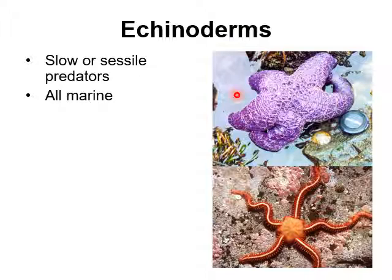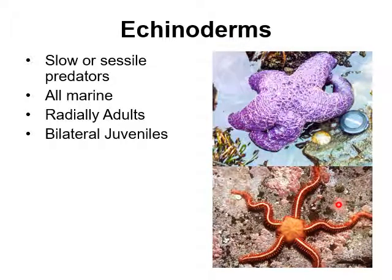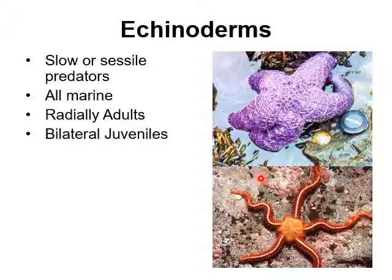Echinoderms are only found in the ocean. An interesting feature is that adult echinoderms display radial symmetry — everything radiates from a central point — but as juveniles they are bilateral, with a left and right side. They undergo a major metamorphosis, transitioning from bilateral symmetry as juveniles to radial symmetry as adults.